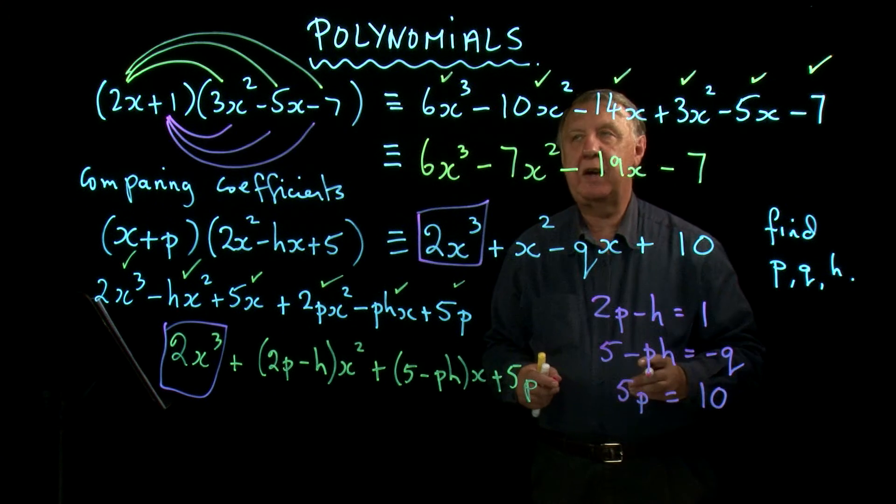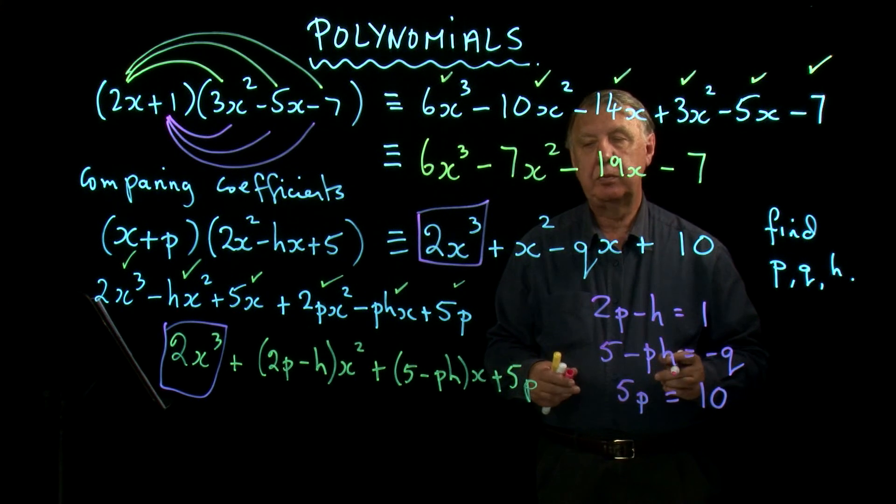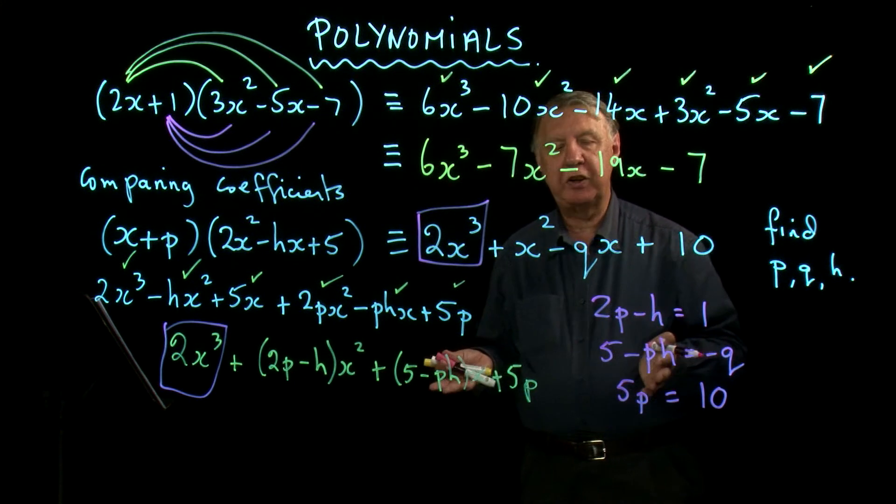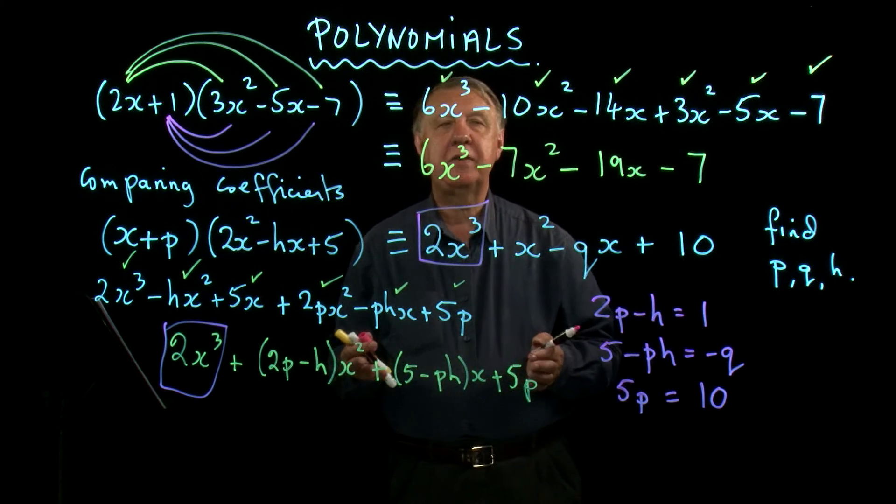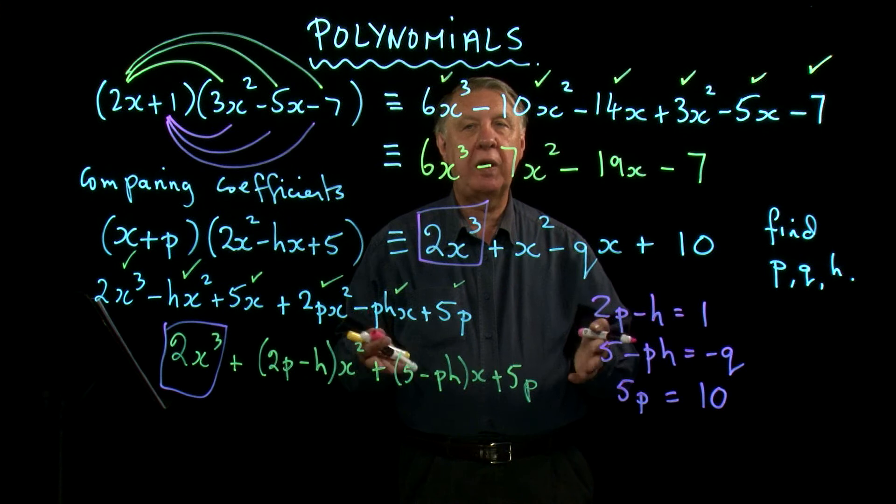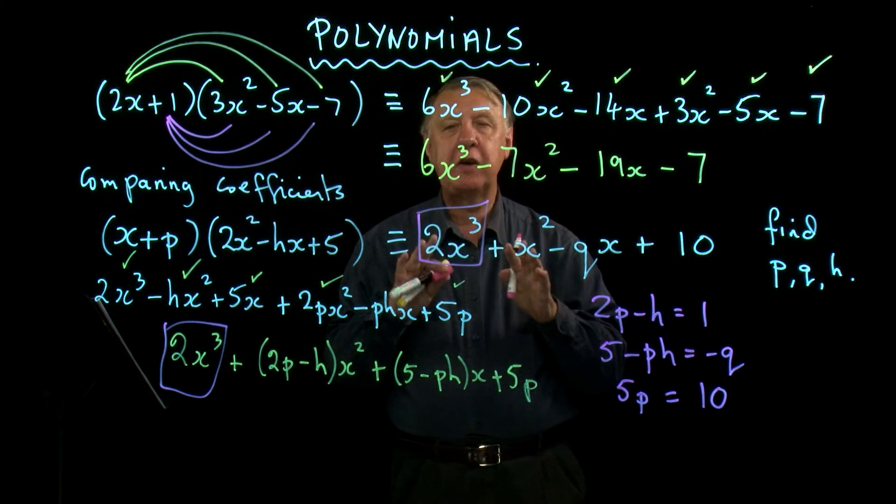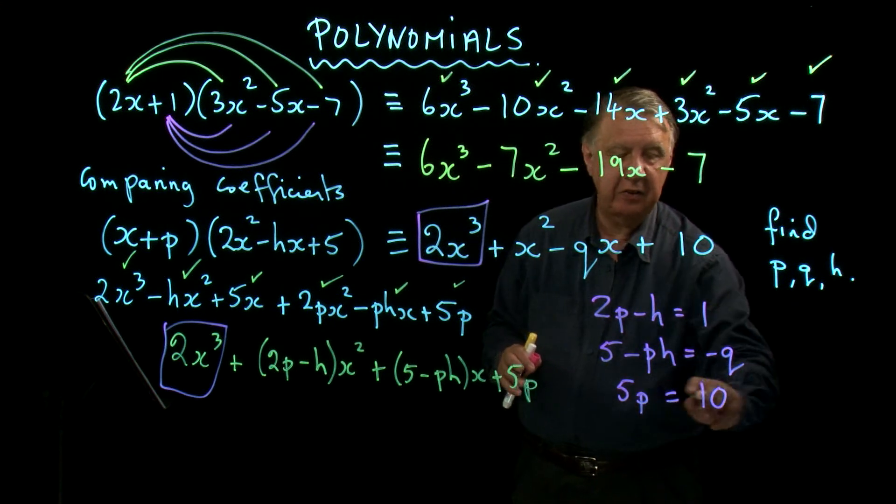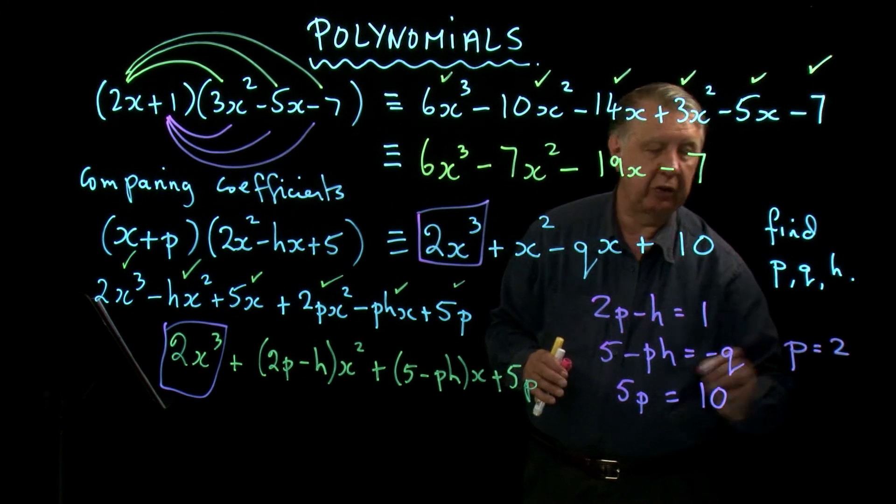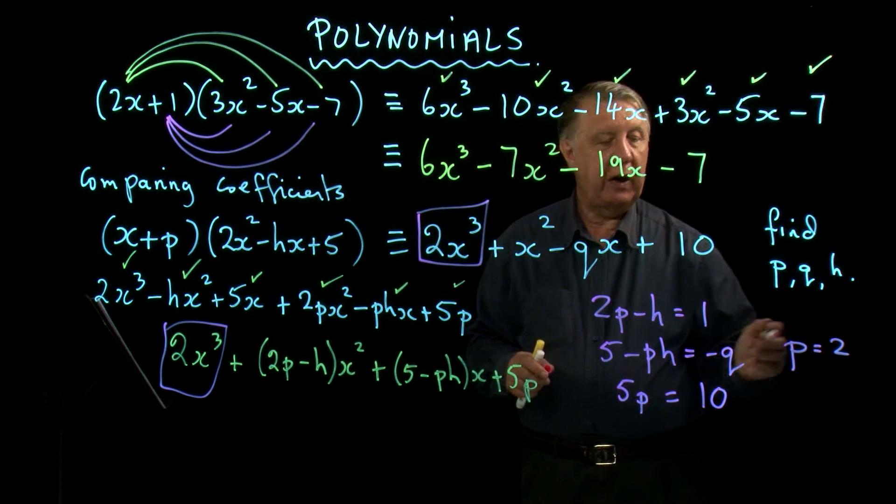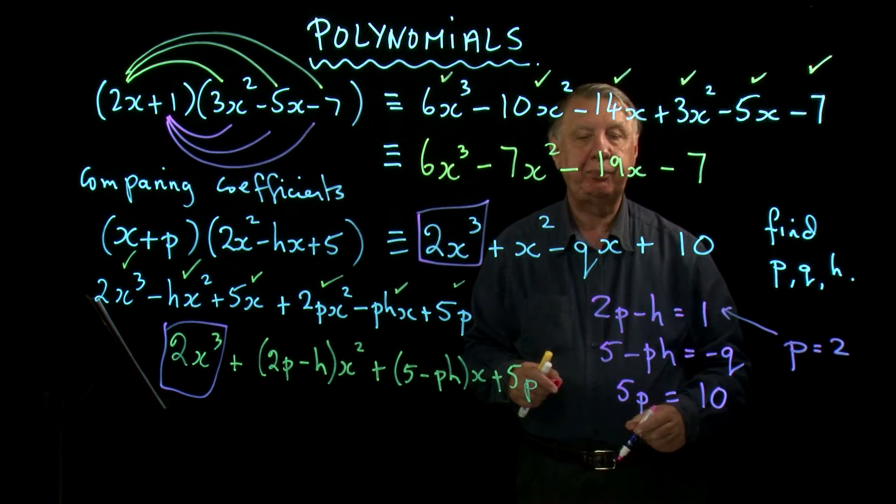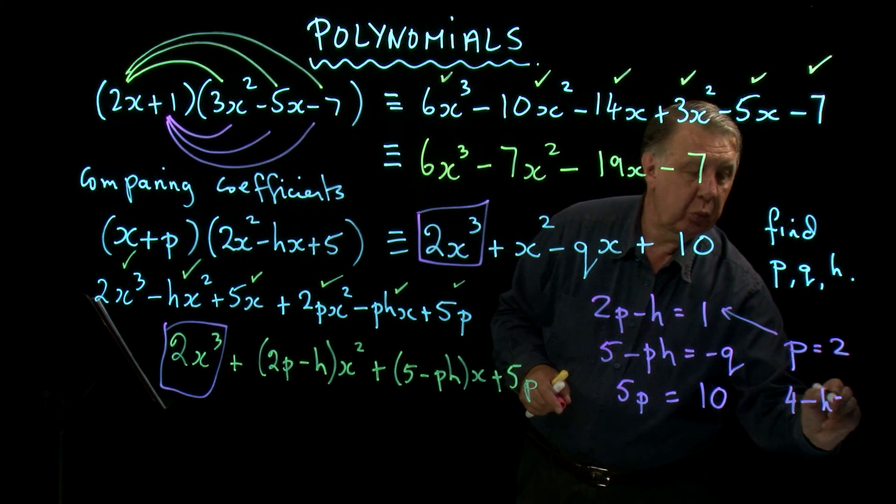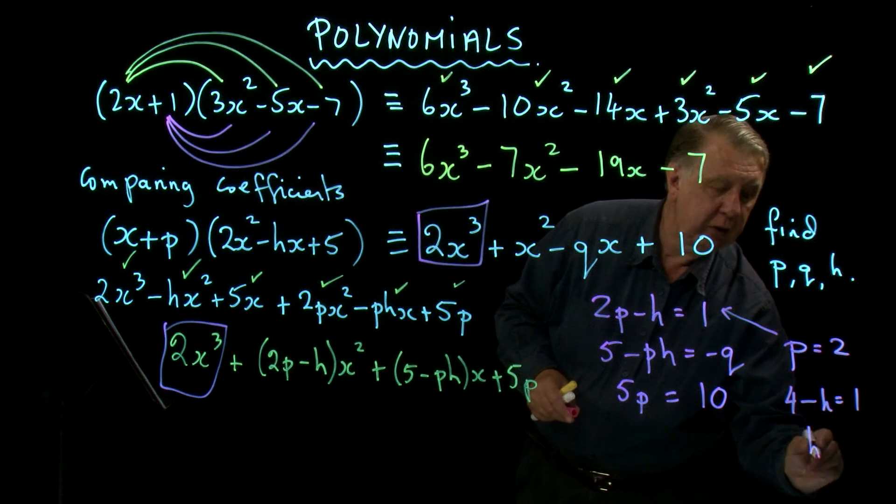So I have a set of simultaneous equations. Now in this type of topic, the equations may look a little bit tricky, but there's always a way of finding one of the variables quite easily at this level. They're not going to give you anything that's really hard. And of course, you can see here straight away that p equals 2. Well if p is 2, I can go to there and I get 4 - h = 1, so h equals 3.